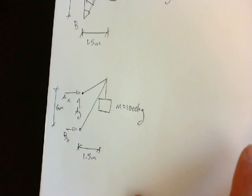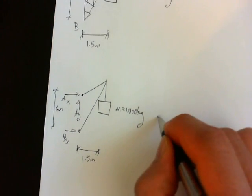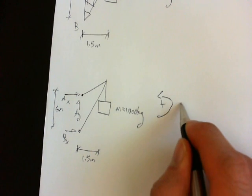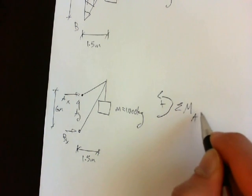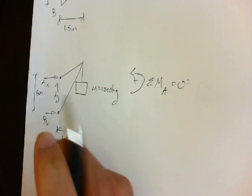Next we sum the moments about point A, and we call anything that's going counterclockwise positive. The sum of moments about point A equal to zero. So let's start with BX.